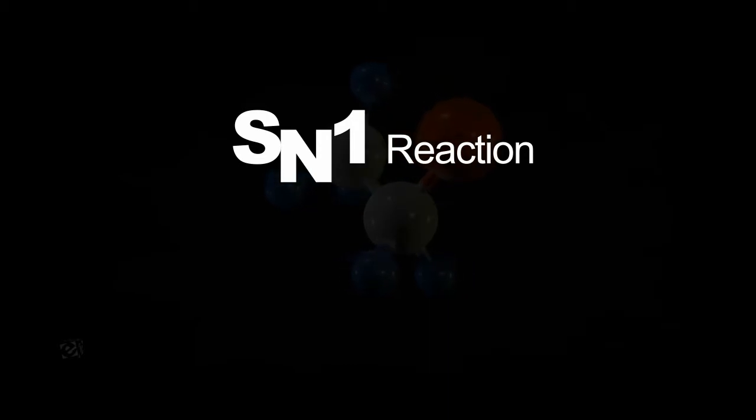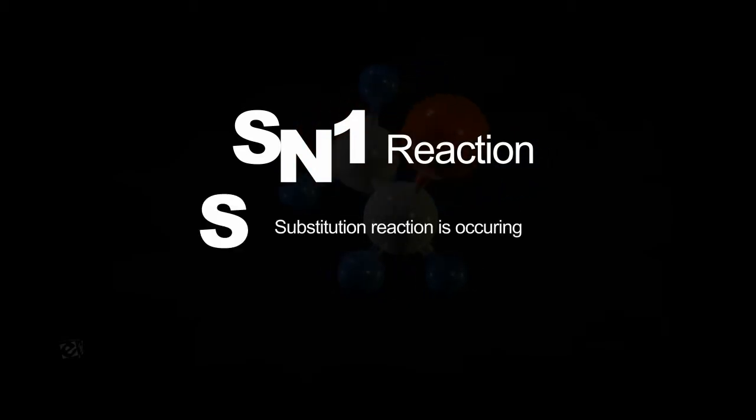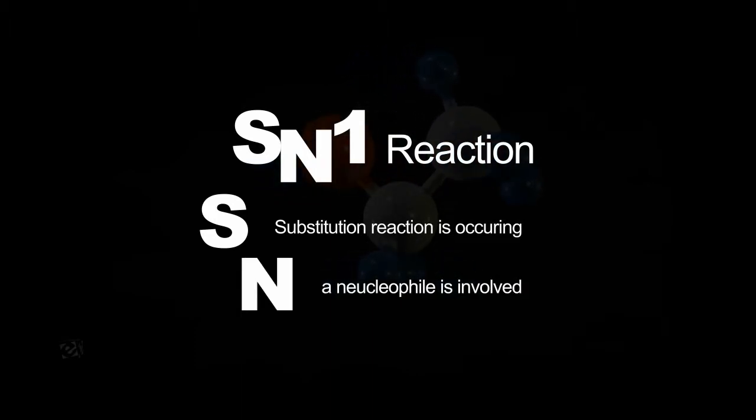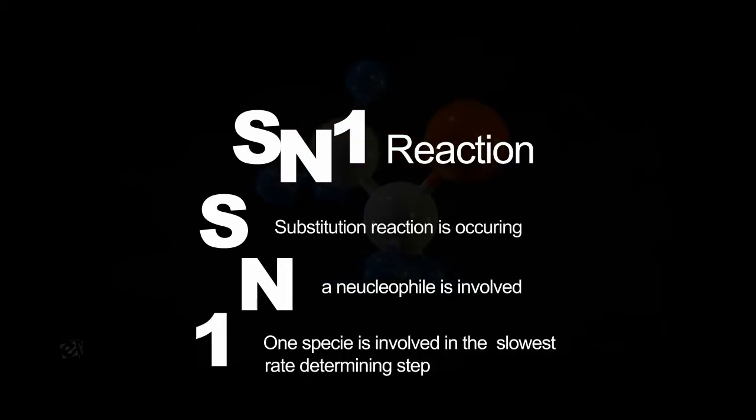SN1 reaction: Tertiary halogenoalkanes undergo SN1 reactions where S indicates a substitution reaction is occurring, N indicates that a nucleophile is involved, and 1 indicates that only one species is involved in the slowest rate-determining step.